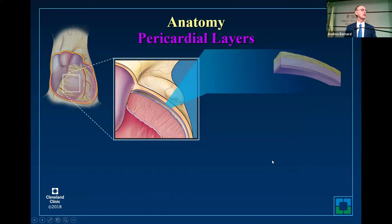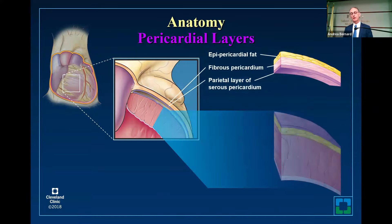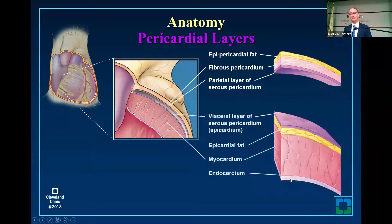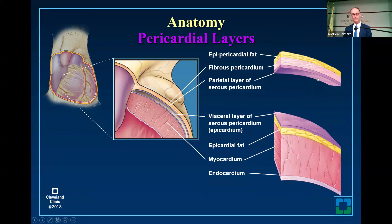These are the layers — it's almost like an onion. Starting with the inner lining, you have endocardium, then myocardium. Then you get a layer of epicardial fat. Then the visceral layer of the pericardium. Here's the potential space — around 50 cc or less of fluid. Then you have the parietal layer, the fibrous layer, and then another layer of fat, the epipericardial fat. So almost like an onion for the pericardium.